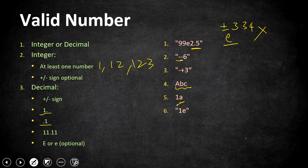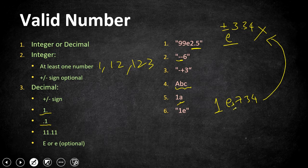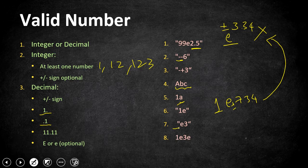The next invalid example is '1e' — 'e' is allowed but it must have digits after it, and at least a single digit before it as well. There should be no decimal point or plus/minus sign after 'e'. Then 'e3' is invalid because there is no number before 'e'. Finally, '1e3e' is invalid because there should be only one 'e'.